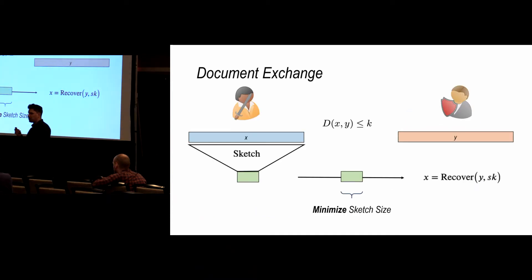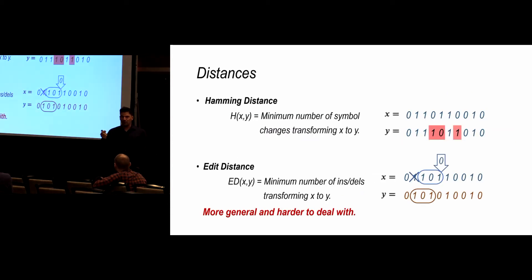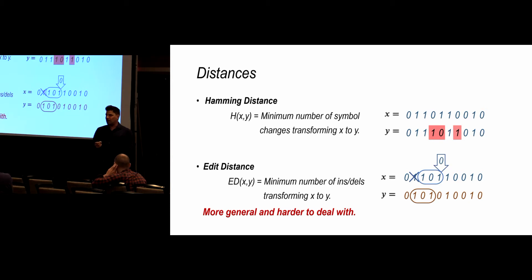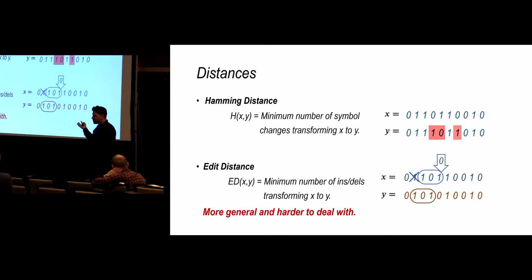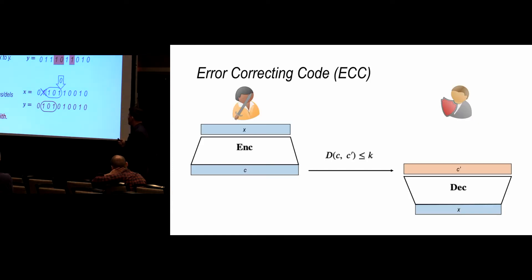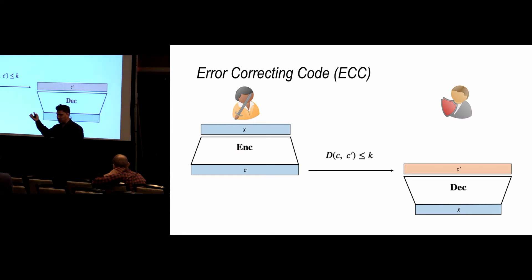The distances we can use here include basically any distance. The most interesting ones are the classical Hamming distance — the number of symbol changes — and all results are mostly interesting for edit distance: how many insertions and deletions are needed to transform X to Y. The classical edit distance is more general, combinatorially trickier, and that makes this whole problem more interesting.